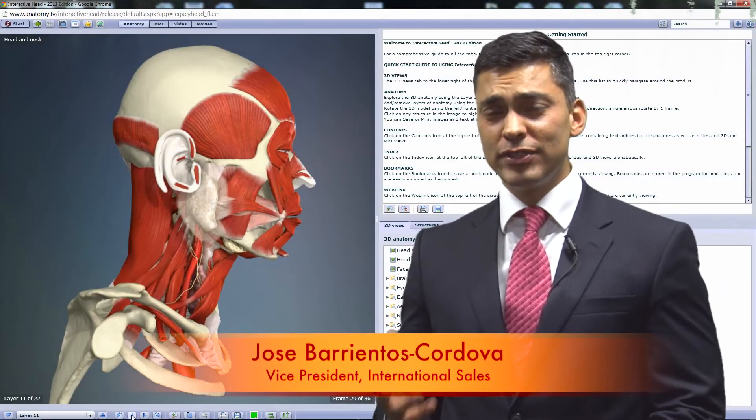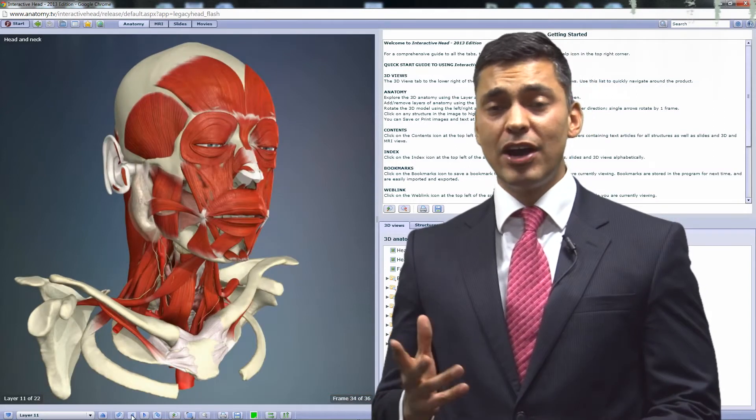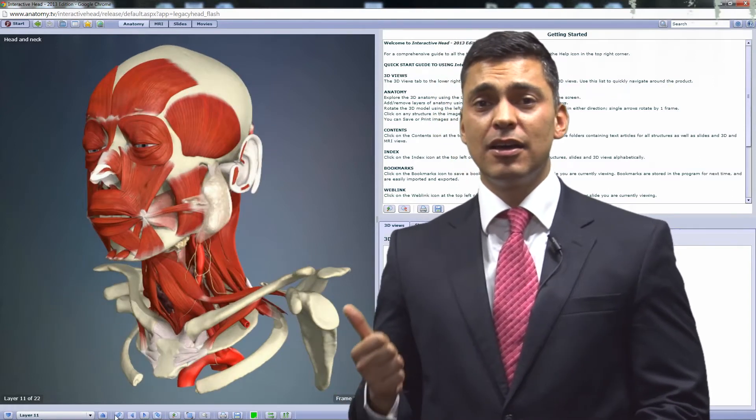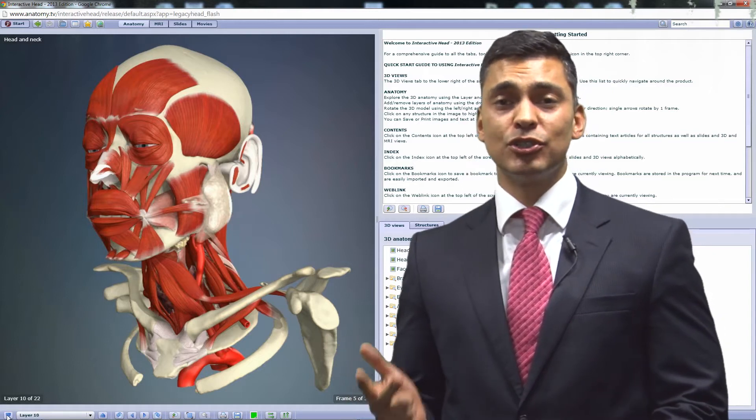Anatomy is the study of the structure of the human body, which is three-dimensional. There are various ways to learn anatomy. Dissection is probably one of the most important ways. Plastic models are also used, and textbooks, which have two-dimensional images.